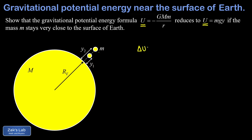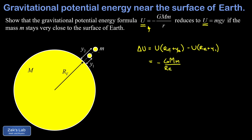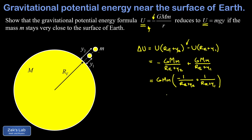Delta U, the change in potential energy, equals U evaluated at the final separation distance r_earth plus y2, minus U evaluated at r_earth plus y1. Plugging into the formula for gravitational PE, we get negative GMm over (r_earth plus y2) plus GMm over (r_earth plus y1). We factor out a G big M little m, then find a common denominator by multiplying the first fraction by (r_earth plus y1) over itself and the second by (r_earth plus y2) over itself.